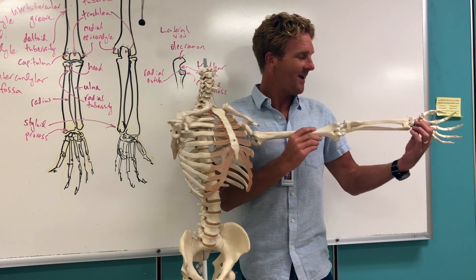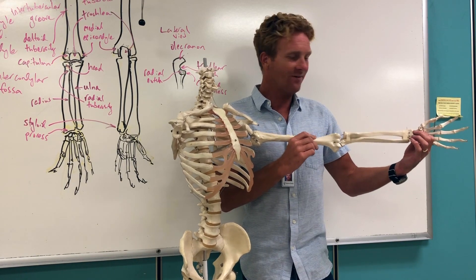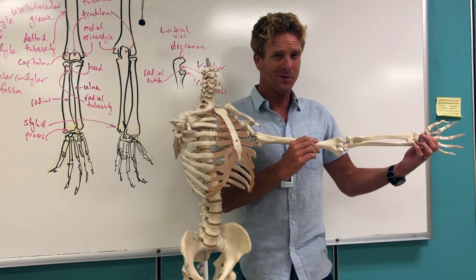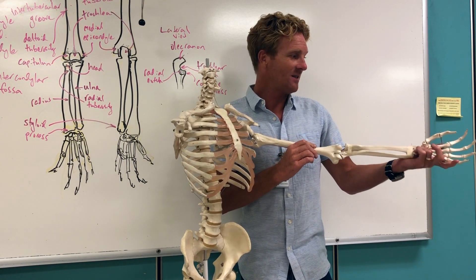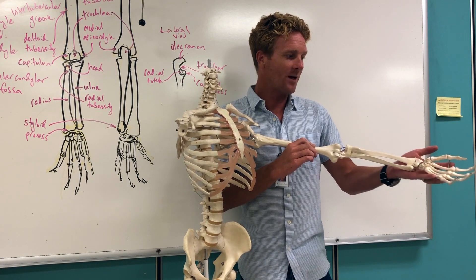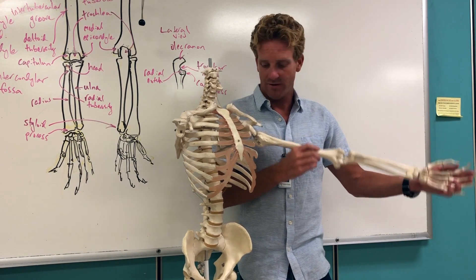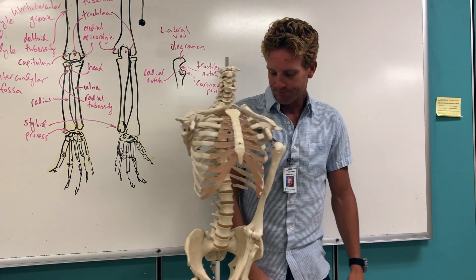The bones of the wrist are collectively called the carpals. Those are connected to the bones of the palm, which are the metacarpals, and the bones of the fingers, which are the phalanges.